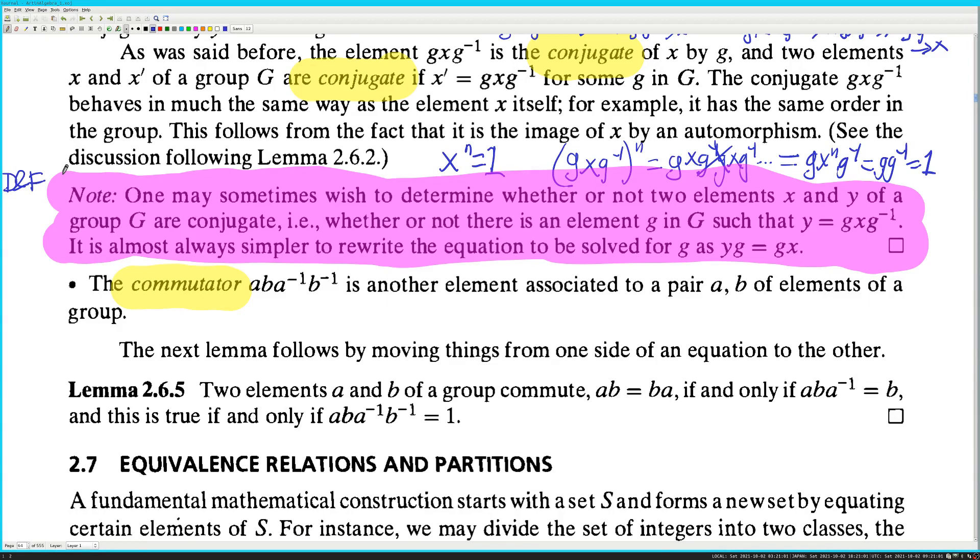The commutator is another element associated to a pair AB of elements in a group. The next lemma follows by moving things from one side of an equation to another. Two elements A and B of a group commute, AB equals BA if and only if AB A inverse is equal to B. And this is true if and only if AB A inverse B inverse is equal to one. And this is super important. So by this logic, if for every A and B you define AB A inverse B inverse equals one, then the group is commutative.